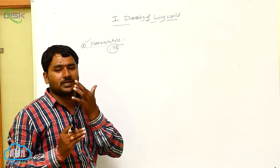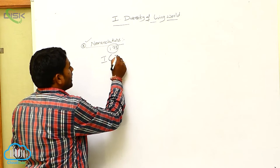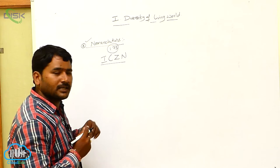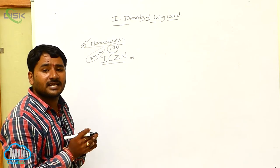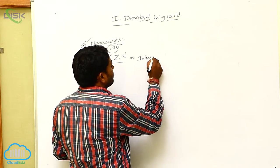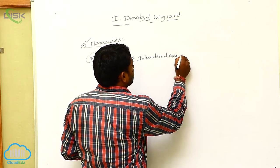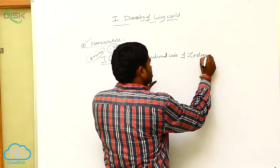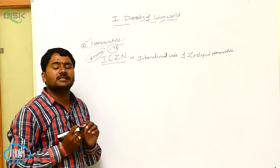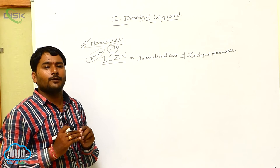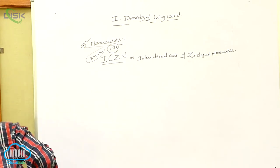There are some rules and regulations for nomenclature. Those rules and regulations are prepared by ICZN. This is a very important two-mark question: what is ICZN, or what does ICZN stand for? ICZN stands for International Code of Zoological Nomenclature. ICZN is an organization which frames or makes some rules and regulations for the nomenclature process.